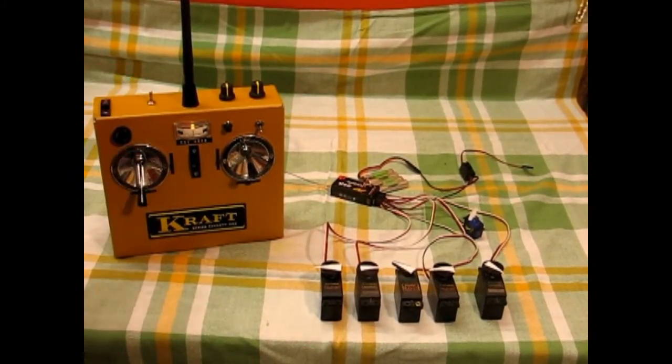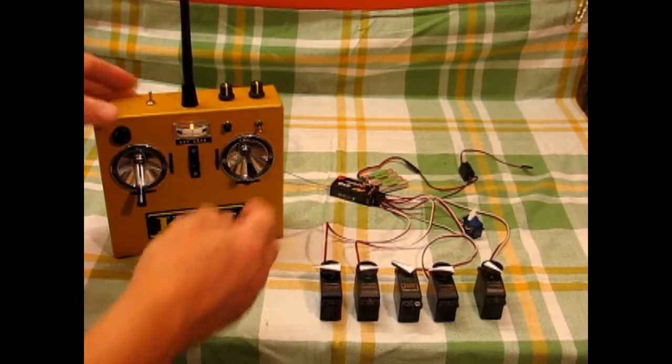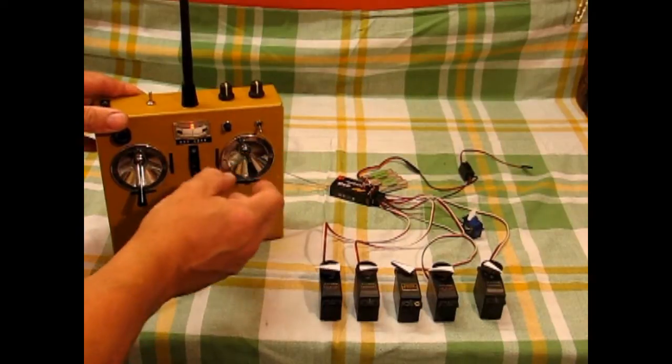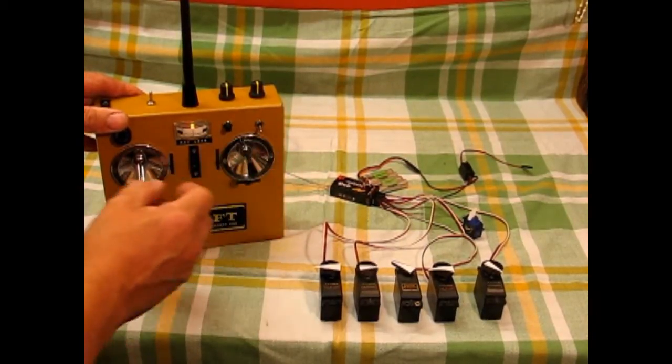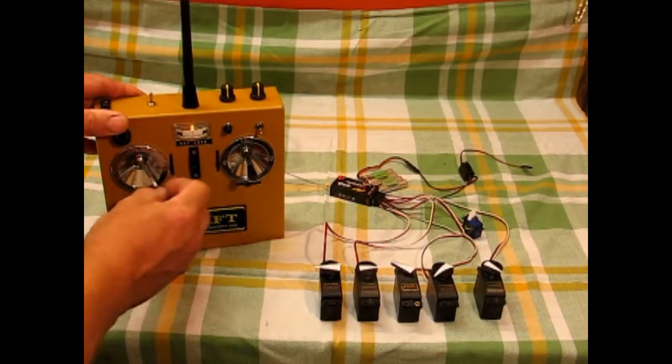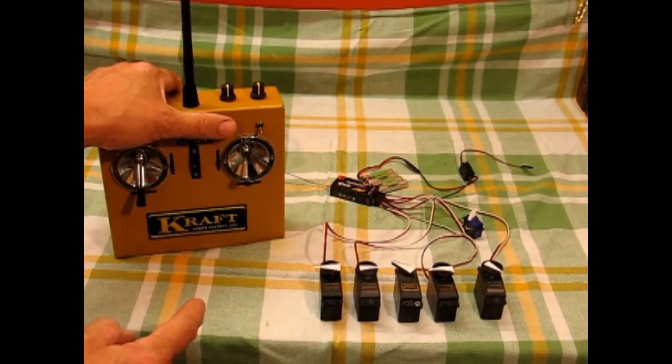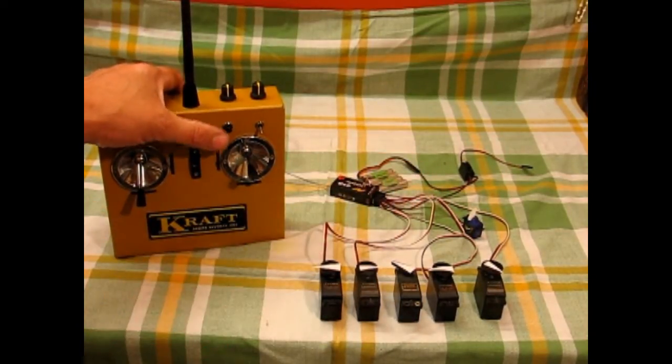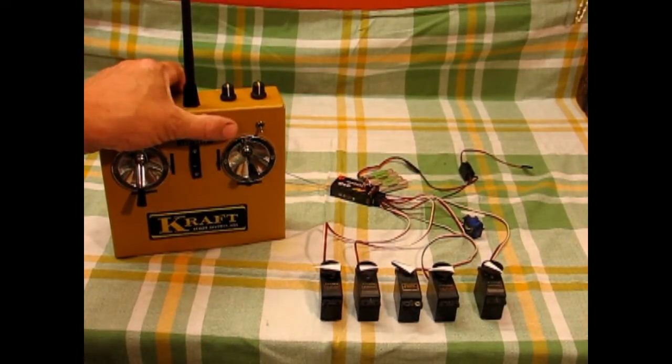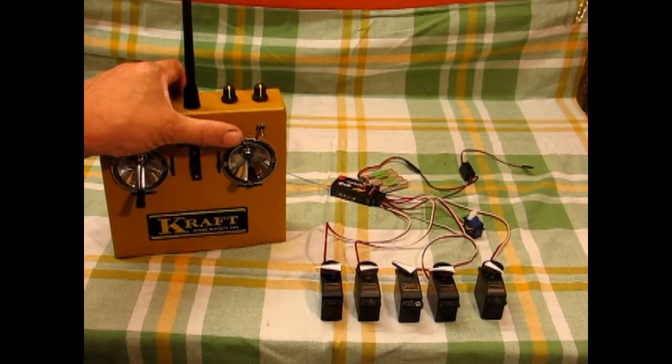I fly mode 2 with the servos in Futaba order, so we've got aileron on channel 1, elevator, throttle on 3, rudder on 4. On 5 I have a little servo which is a momentary push button. You'd use that for tow release, bomb drops, camera triggers, that kind of thing, just a momentary action.